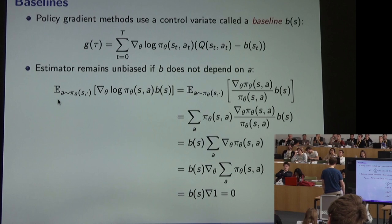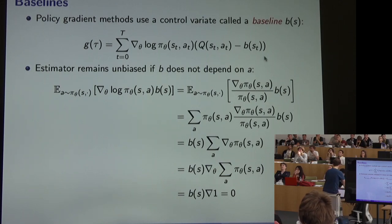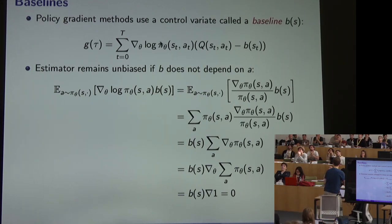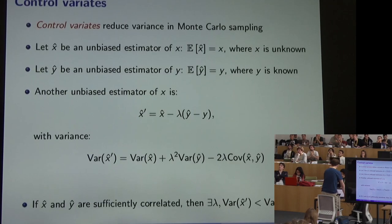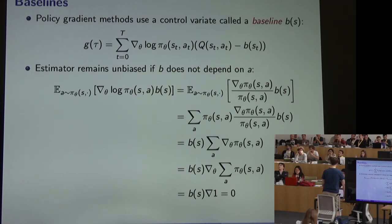The estimator remains unbiased as long as the baseline doesn't condition on the action. The new term we've added — b(s) times the score function — has expected value zero. This is because the score function, which appeared in our log-likelihood trick, has an expected value of zero. So the baseline term serves as a control variate without introducing any bias.